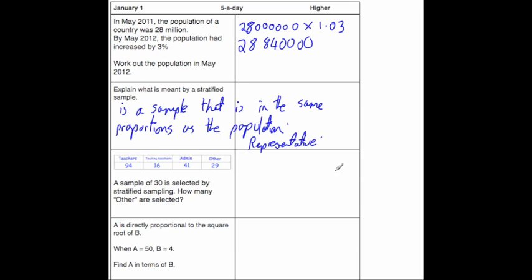The next question then says a stratified sample of 30 is selected. How many other are selected? So we've got 94 teachers, 16 teaching assistants, 41 admin and 29 other. So the formula is the number in category which is 29 divided by the total. So let's add up the total: 94 plus 16 plus 41 plus 29. That gives us 180. And we just need to times that by the sample size which is 30.